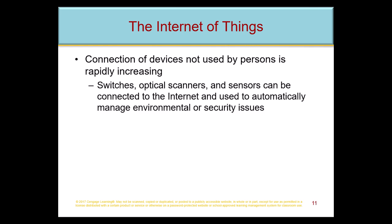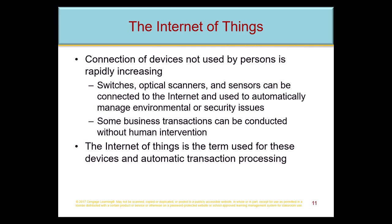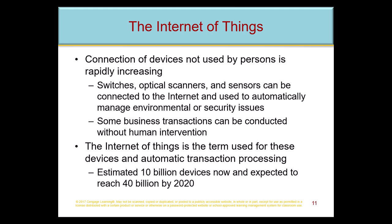Some business transactions can be conducted without human intervention — that's like Alexa placing an order for items without you knowing it was going to do that. At the time of publication, there were an estimated 10 billion IoT devices, projected to grow to over 40 billion by 2020, and we'll see in a minute why that has created its own problems.